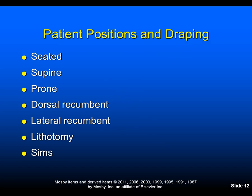We'll begin by talking about patient positions and draping. In the seated position, the drape should cover the patient's legs and lap and can be moved to uncover parts of the body being examined. The supine position is when the patient lies on their back with arms at the sides and legs extended — the drape should cover from chest to knees or toes. In the prone position, the patient lies on their stomach; this may be useful for special maneuvers such as part of the musculoskeletal exam, and we drape the patient to cover the torso.